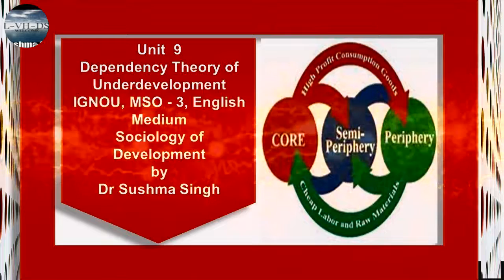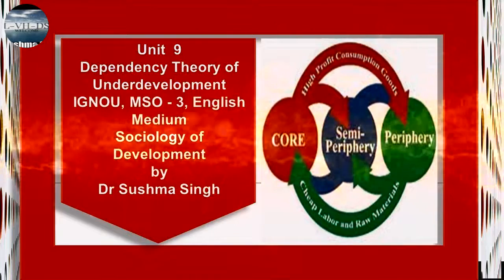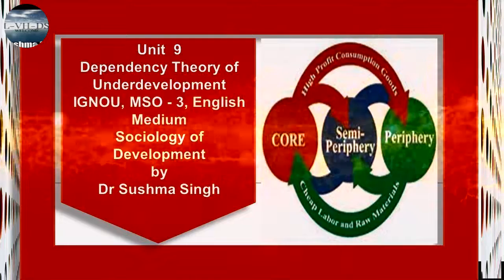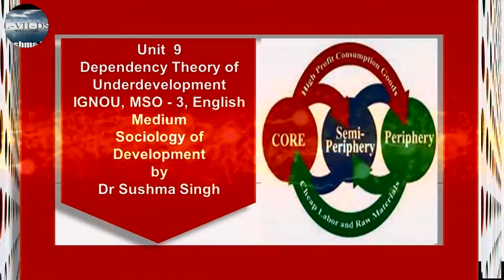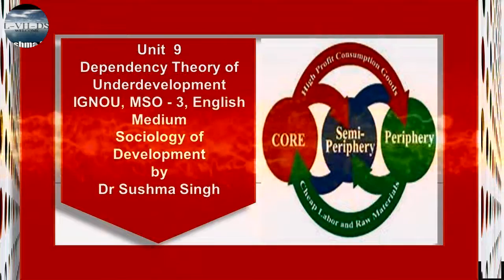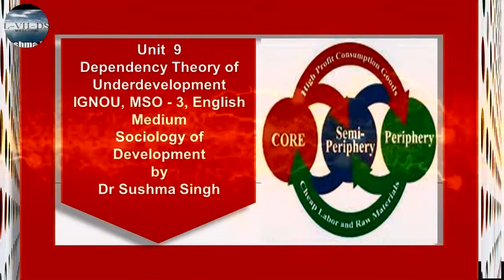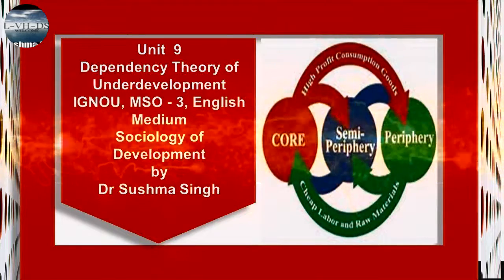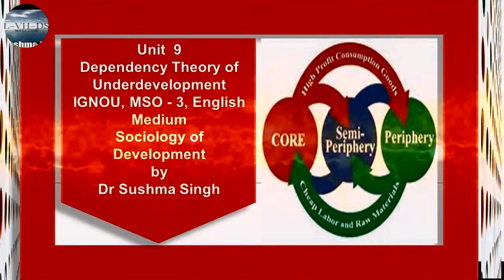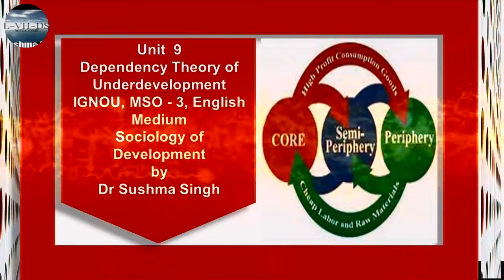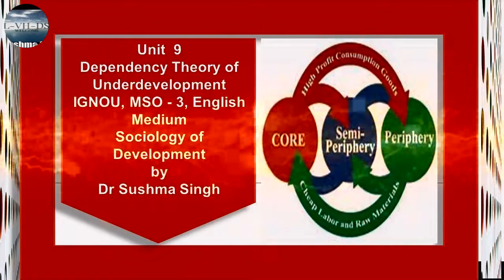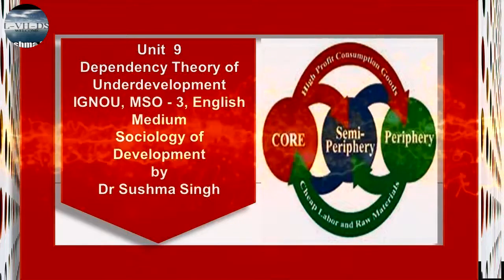In the following section, we will attempt to capture the main propositions of dependency theory, but before that, let us answer some questions. After reading the three strengths of the arguments presented above, we must have realized that dependency theories essentially point out that the world is interconnected in a way that development or underdevelopment cannot be seen in isolation. What do we say about the increase of multinational corporations and interconnected world of globalization? More than ever, the world is divided into core and periphery. Do we consider India a peripheral nation or semi-peripheral nation if we were to argue from the perspective of world system theory?